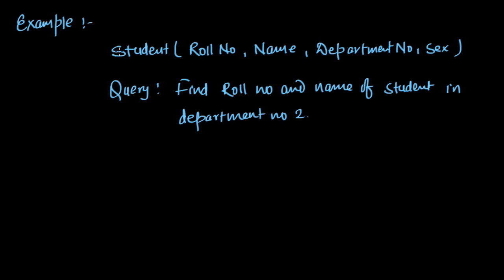In this example, we have been given a relation in which we have attributes: roll number, name, department number, and sex. The query is: find roll number and name of students in department number 2. So we have to write it in the form of tuple relational calculus. As we have just studied, first of all we will have a tuple variable, right?